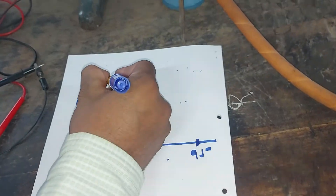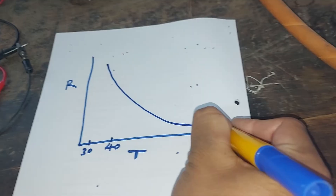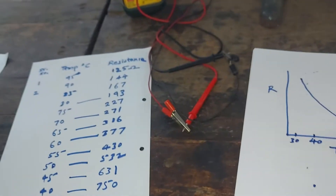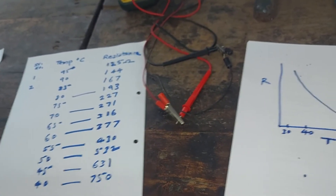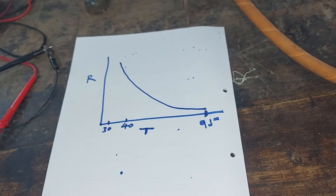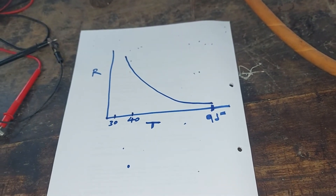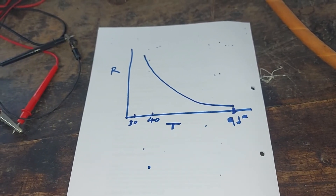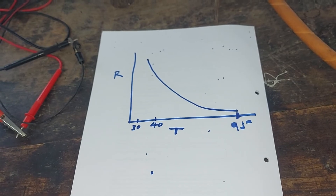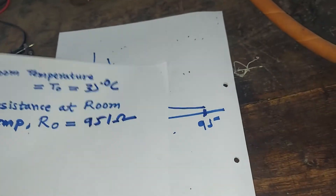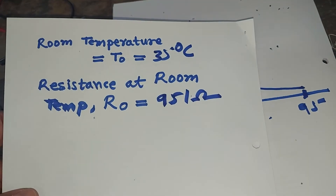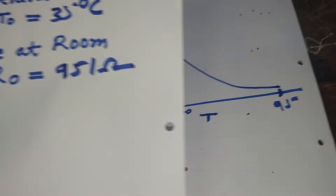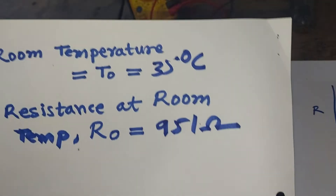We plot these points on the resistance R versus temperature T graph. Earlier we noted down the room temperature, which was 35 degrees centigrade, and the resistance at room temperature was 951 ohm. So at room temperature T0 = 35°C, the value R0 was 951 ohm.